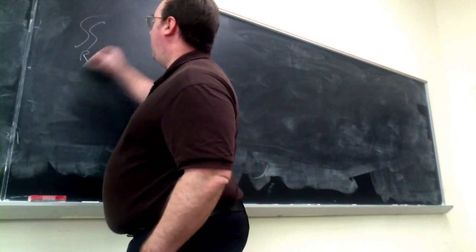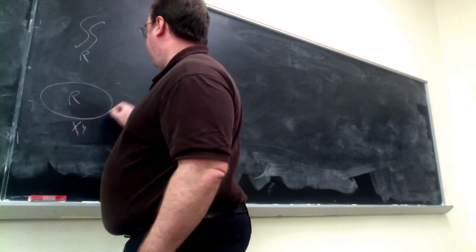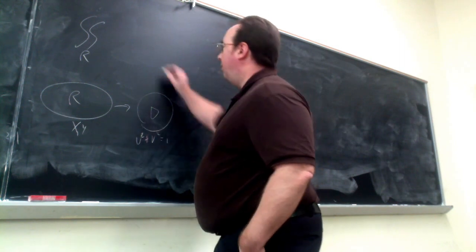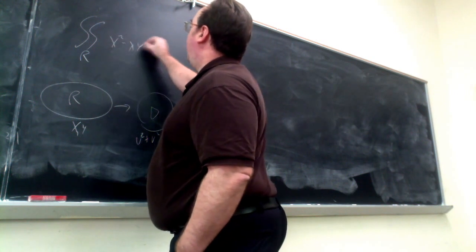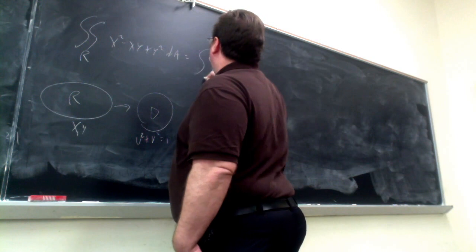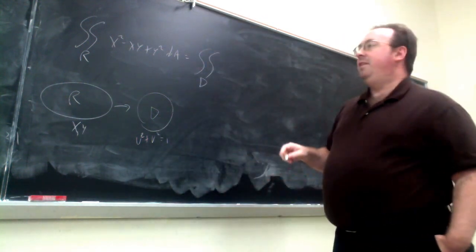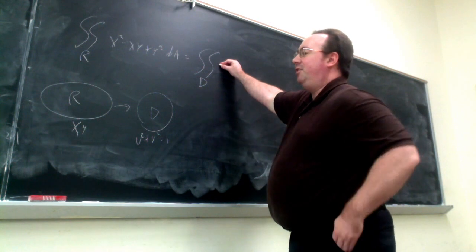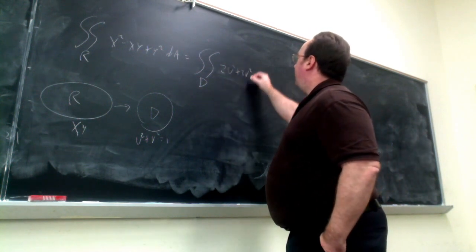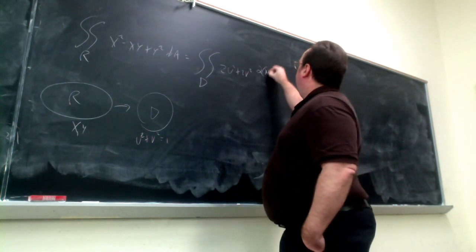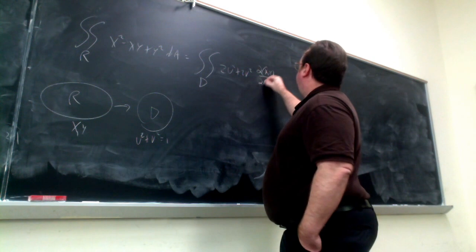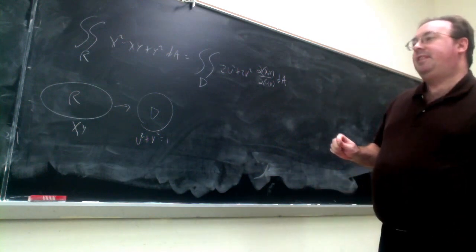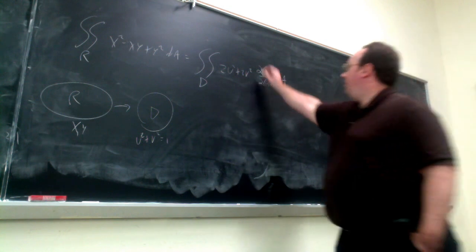Our original integral of x² − xy + y² dA over ellipse R is now an integral over the unit disk D. The integrand transforms to 2u² + 2v². We still need the Jacobian of x and y with respect to u and v — don't forget that, and don't forget the absolute value.